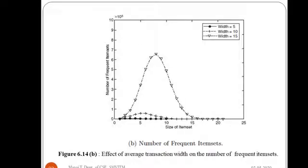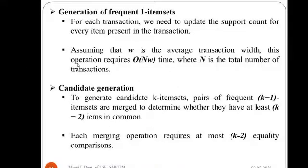Next, generation of frequent one-item sets. For each transaction we need to update the support count for every item present in the transaction. Assuming that w is the average transaction width, this operation requires O(Nw) time, where N is the total number of transactions.